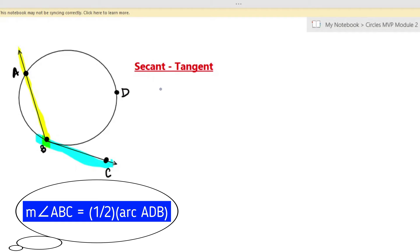Alright guys, I'm going to make up some problems so that we can practice this new theorem. I'm going to give you the measure of the angle and I want you to figure out the measure of the arc. Pause the video right now to give yourself some time to figure out the measure of arc ADB if the measure of angle ABC is equal to 100.